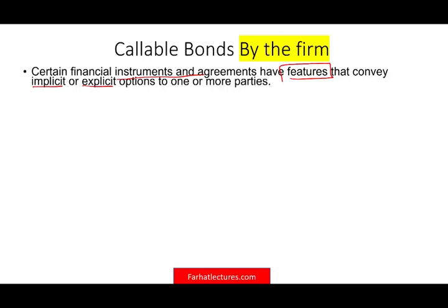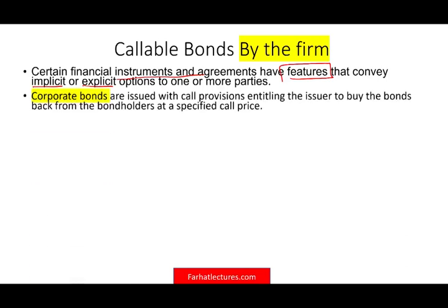That's why we call them option-like securities, starting with callable bonds. When corporate bonds are issued with a call provision, it entitles the issuer. It's very important to understand who has the option. When we use the term callable, the company, the firm, or the issuer has the option — meaning the company that issued the bond will have the right to call it back, to buy the bond back from the bondholder at a specified call price.